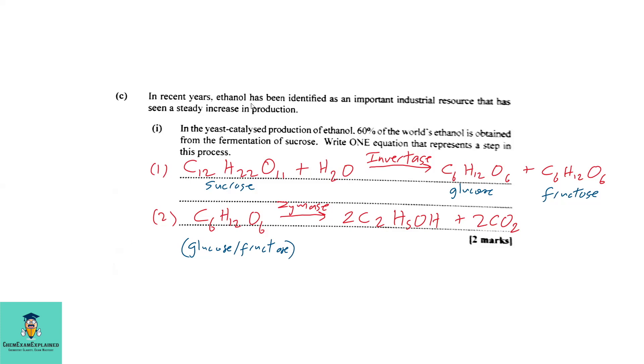Part C: In recent years, ethanol has been identified as an important industrial resource that has seen a steady increase in production. Part 1: In the yeast-catalyzed production of ethanol, 60% of the world's ethanol is obtained from the fermentation of sucrose. Write one equation that represents a step in this process. So they require one equation. So here I have two equations and anyone you write would suffice. So in the first equation, I have sucrose plus water using the enzyme invertase to form glucose and fructose. Instead of writing out the C6H12O6 two times, you could put two in front of the molecule. The other equation is now converting your glucose to ethanol and carbon dioxide using the enzyme zymase.